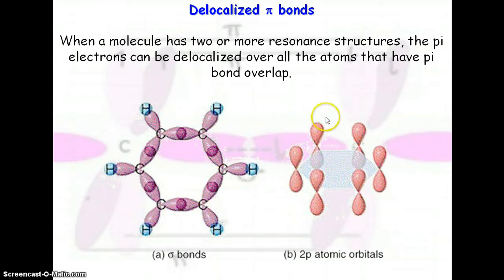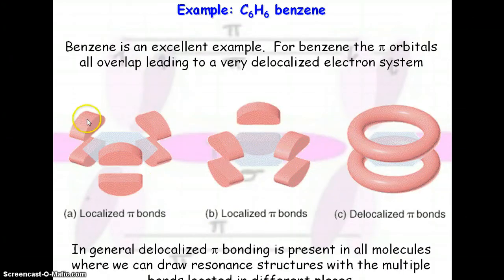And then you have these p orbitals coming up here. Now, you see that we have one, two, three things coming off this carbon. So that would be sp2 hybridized. And remember, in sp2 hybridization, you have one p orbital that is left, and it's not hybridized at all. So it's just vertical, it's just sticking up and down. So here are all of these p orbitals that have not been hybridized.